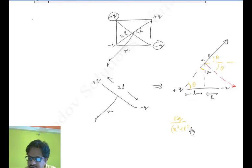Plus l² under root square, and this is cosθ. From this triangle, cosθ can be found as l upon √(x² + l²). Overall, the force comes out to be kql/(x² + l²)^(3/2), and if I double it, it becomes this.